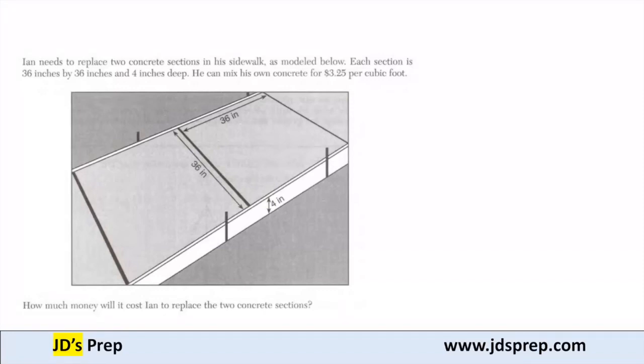Hello, welcome to JD's Prep. In this example, Ian needs to replace two concrete sections in his sidewalk as modeled below. Each section is 36 inches by 36 inches and 4 inches deep. He can mix his own concrete for $3.25 per cubic foot.